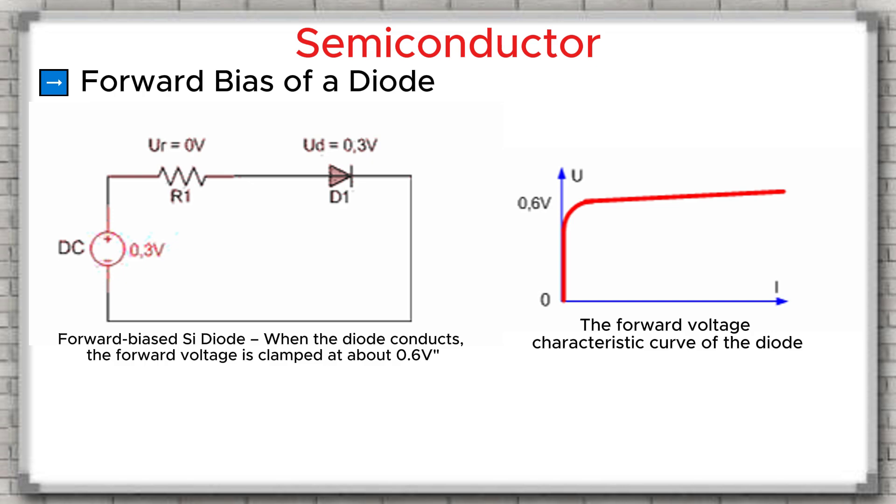Forward bias of a diode. When we apply a positive voltage to the anode, which is the P-type region, and a negative voltage to the cathode, which is the N-type region, something important happens. Under the effect of this external voltage, the insulating barrier at the P-N junction becomes narrower. When the voltage difference between the two terminals reaches about 0.6 volts for a silicon diode, or about 0.2 volts for a germanium diode, the insulating region completely disappears. At that moment, the diode starts to conduct current. If we continue to increase the supply voltage, the current through the diode rises very quickly. However, the voltage across the diode does not rise. It remains almost constant at about 0.6 volts for a silicon diode.